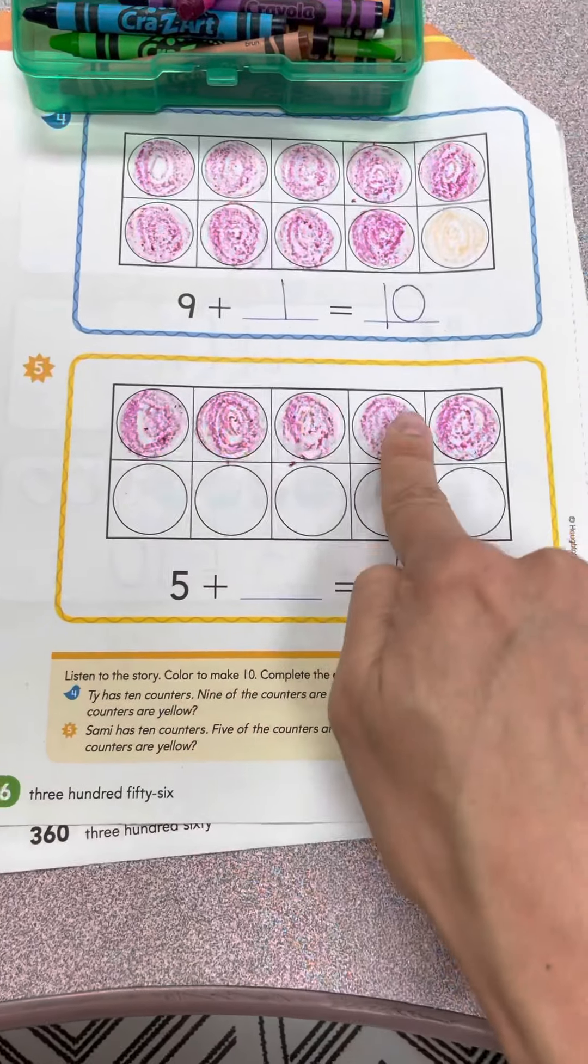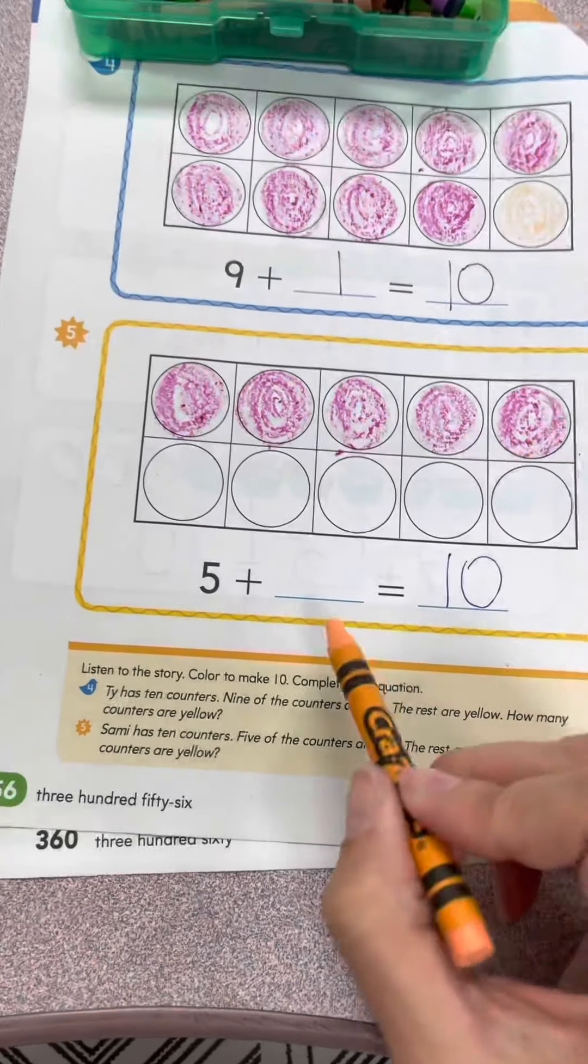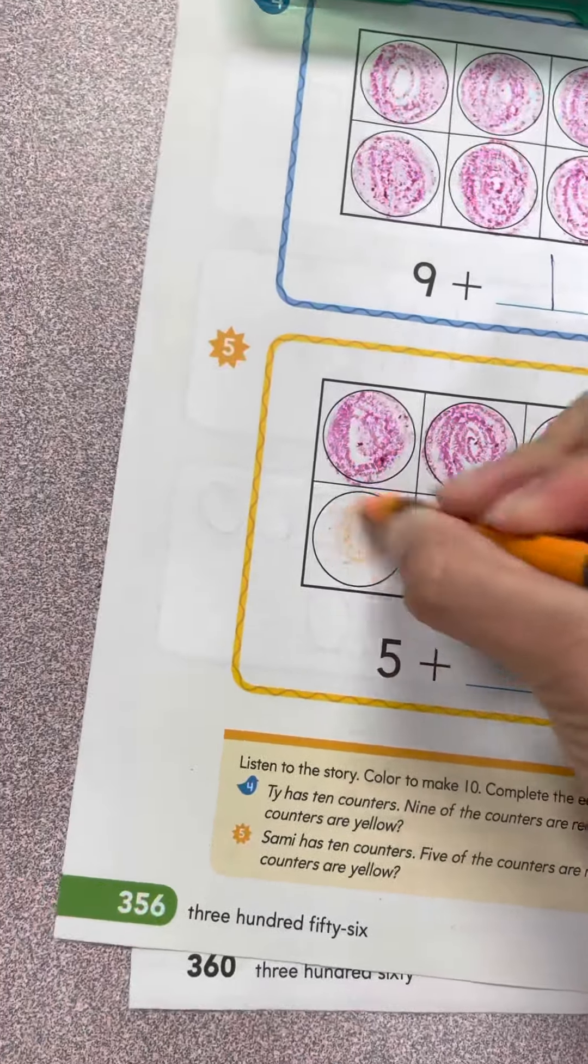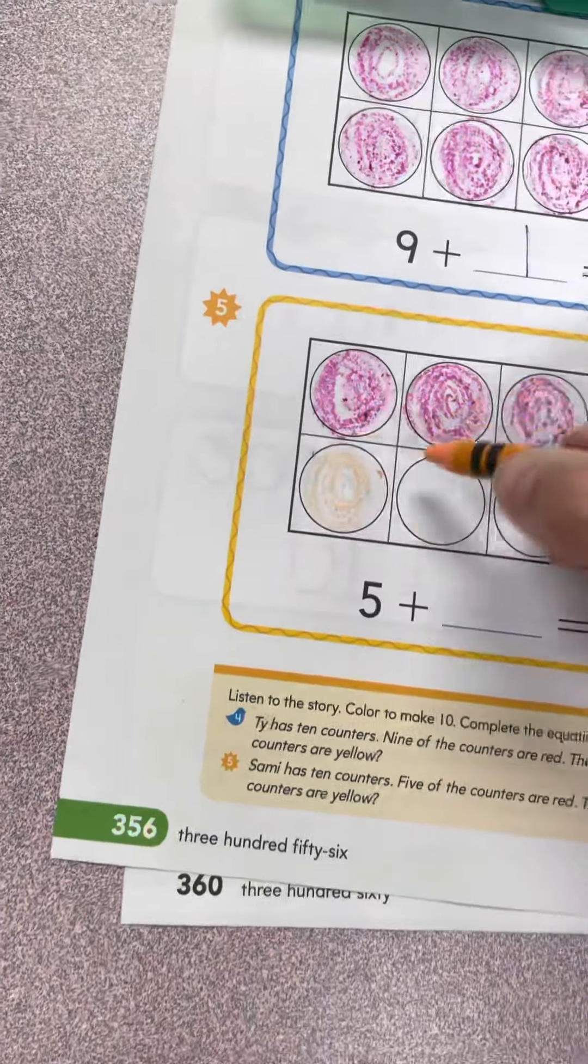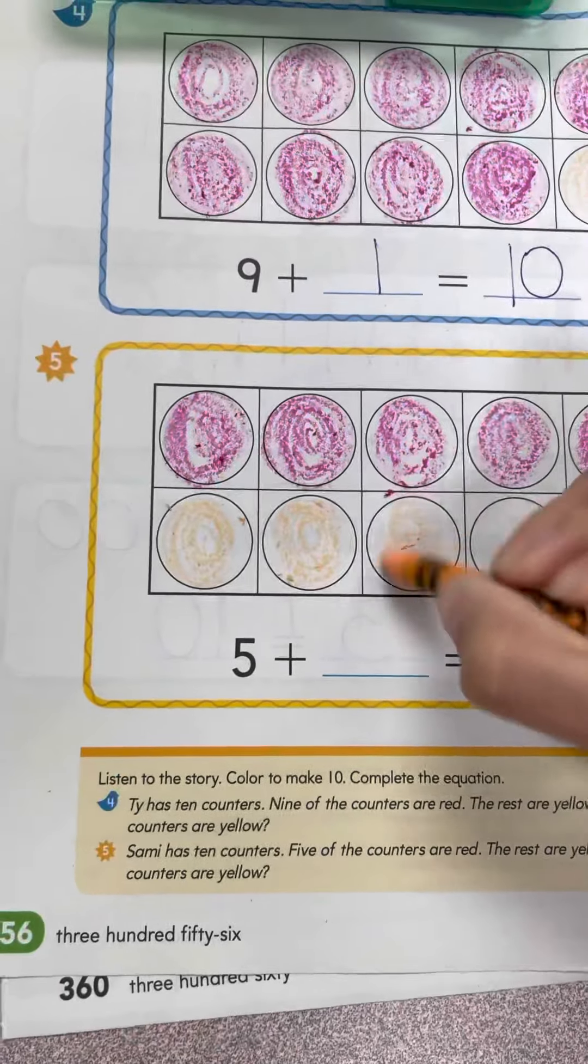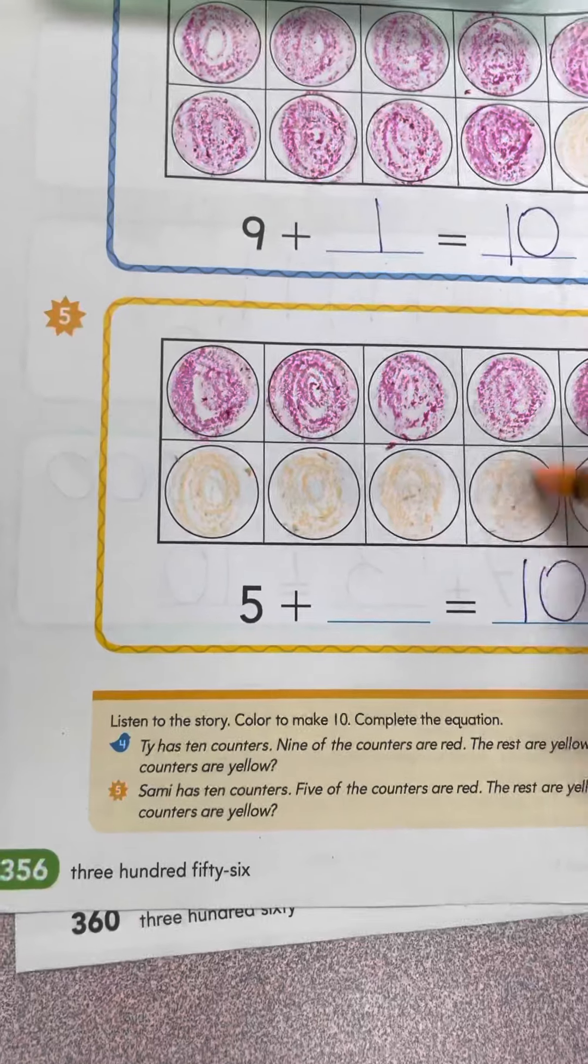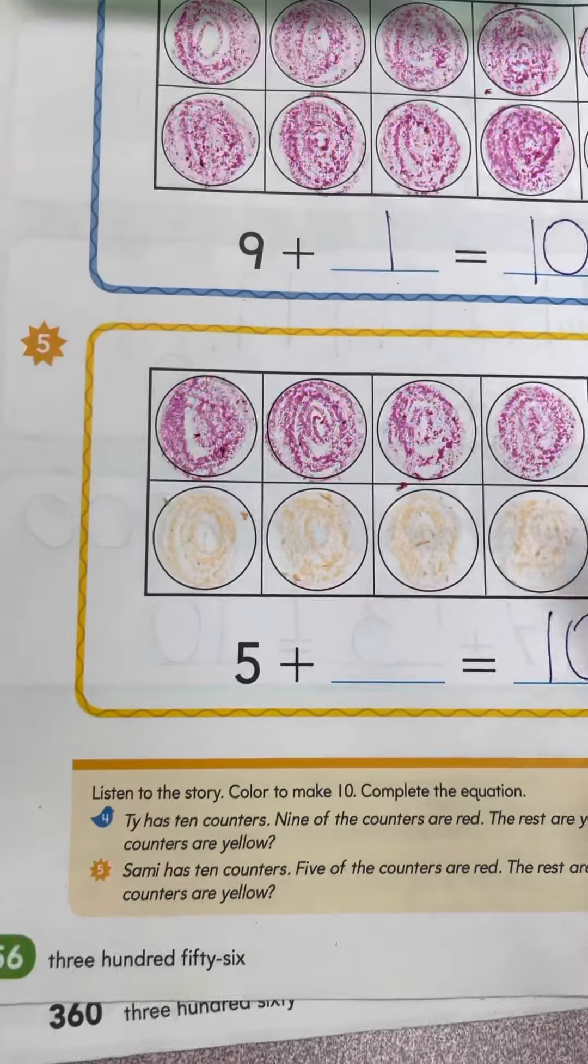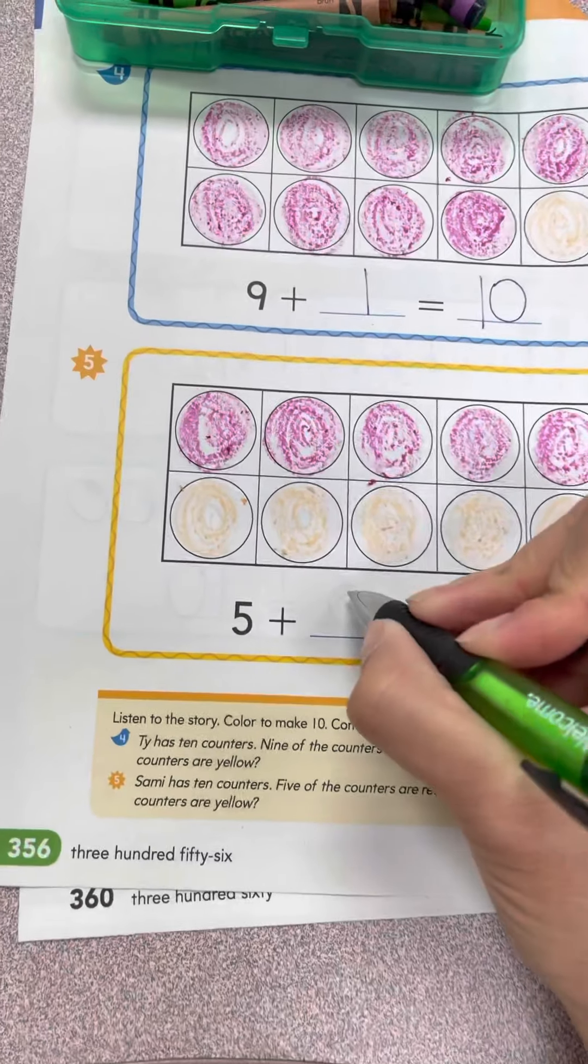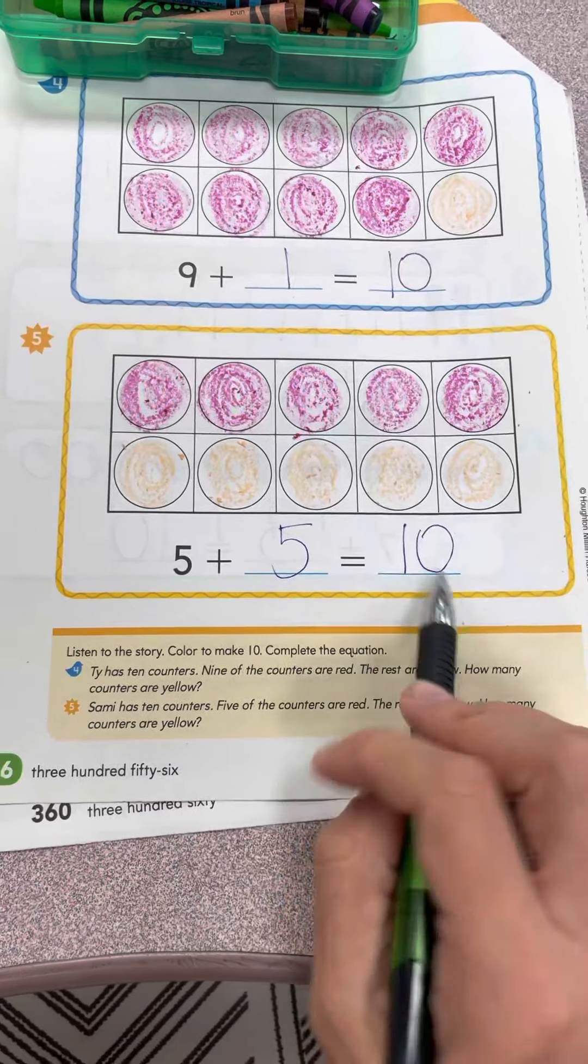The rest are yellow. So we color the rest: 1, 2, 3, 4, 5. How many are yellow? 5. 5 plus 5 equals 10.